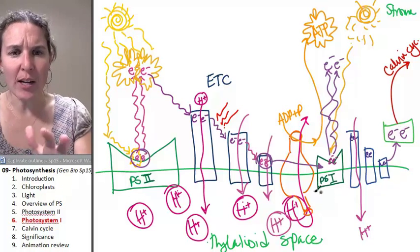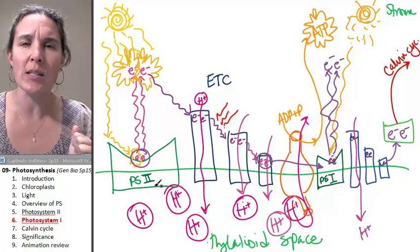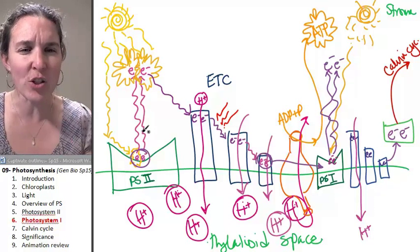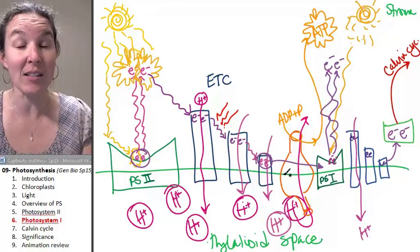So we've got two final electron carriers. We still don't know what's going on with Photosystem II. Where do these electrons come from? How can we replace these electrons that get passed along?